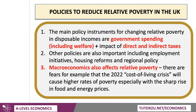A really key point, particularly for a synoptic paper, is that relative poverty affects people at the level of the household — it is a tremendously important issue. But macroeconomics also affects relative poverty. You must be aware that the 2022 cost of living crisis in the UK is probably going to lift poverty in the next couple of years, particularly with food and energy prices surging as they are.